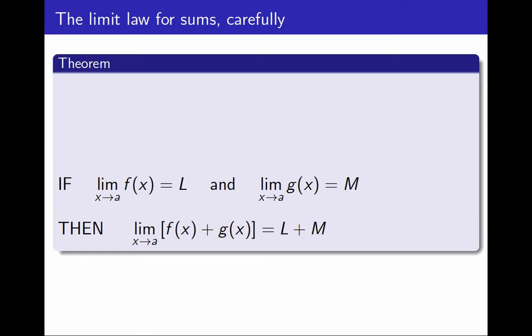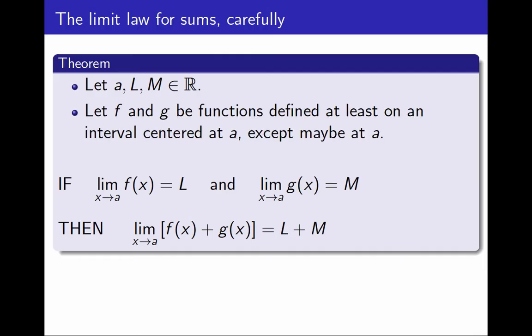For this to be a precisely written statement, I need to introduce all my variables. So before I said this, I should have said that a, l, and m are real numbers, and f and g are functions. And so that I can talk about their limits as x approaches a, I would require that f and g be functions defined at least on an interval centered at a, except maybe at a. And now this is a precisely written statement.